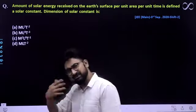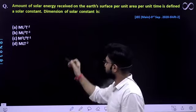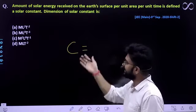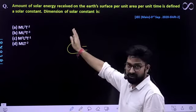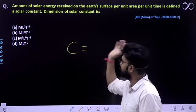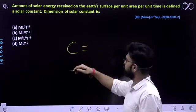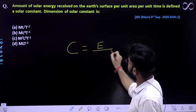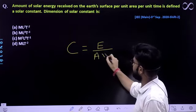We will see the question which is given. Visualize what is given. Solar constant, let it be C. This question is for dimensional analysis. Solar constant, let it be C. So, it is equal to energy received per unit area per unit time.